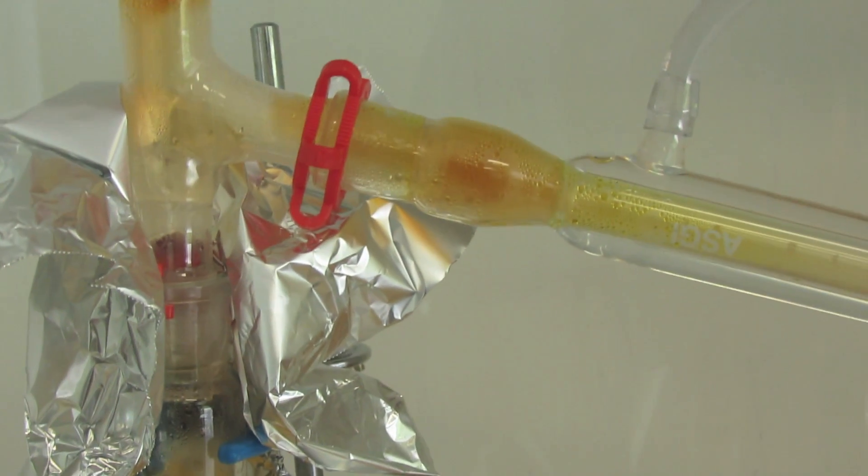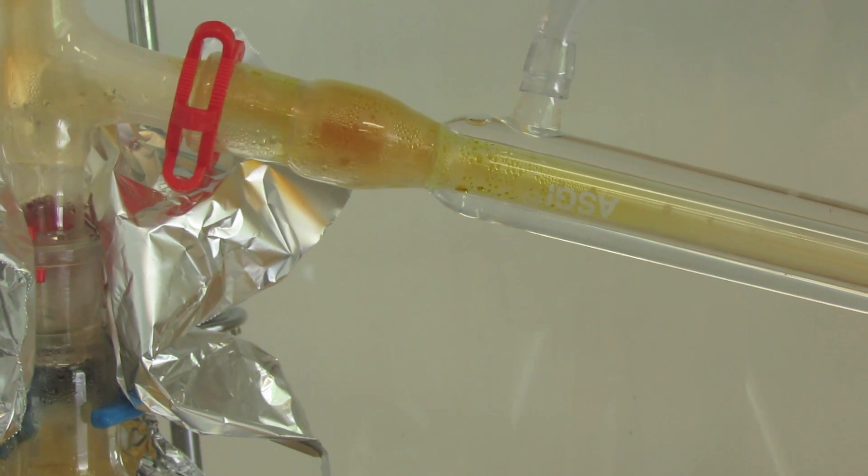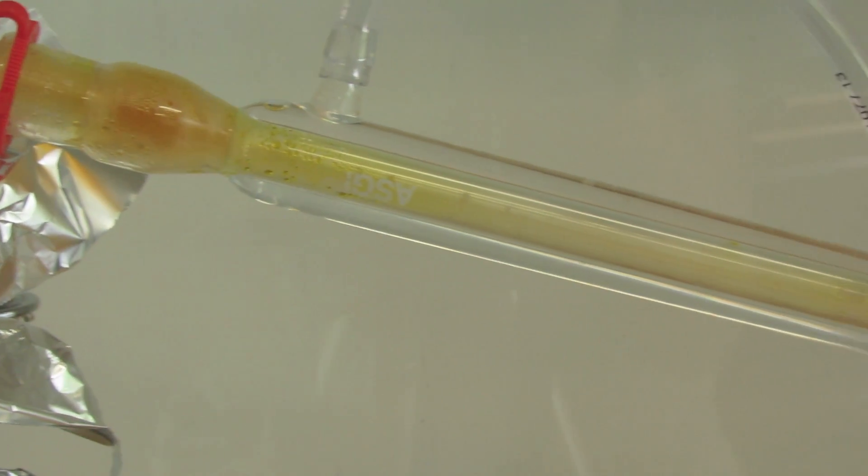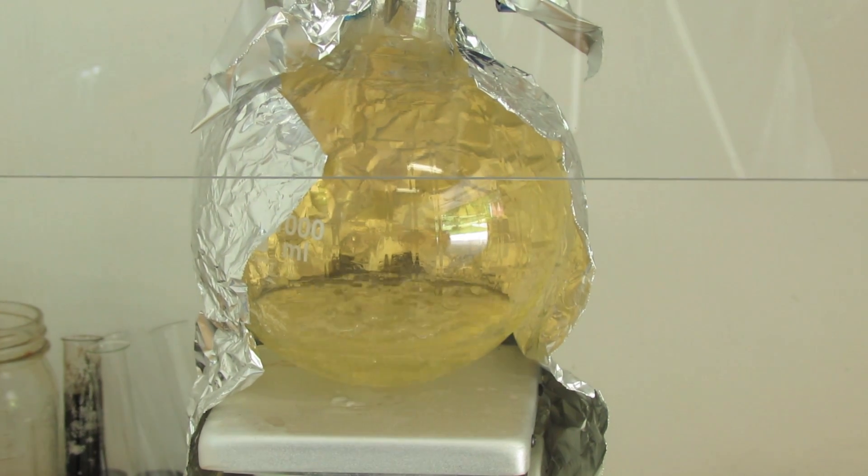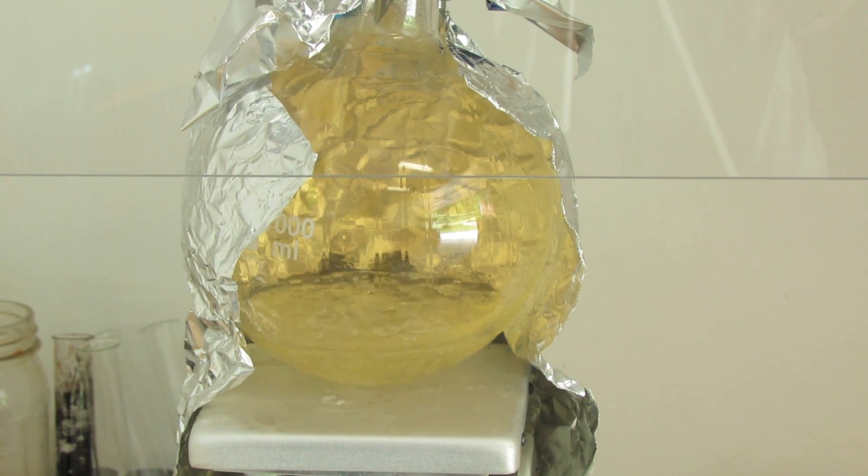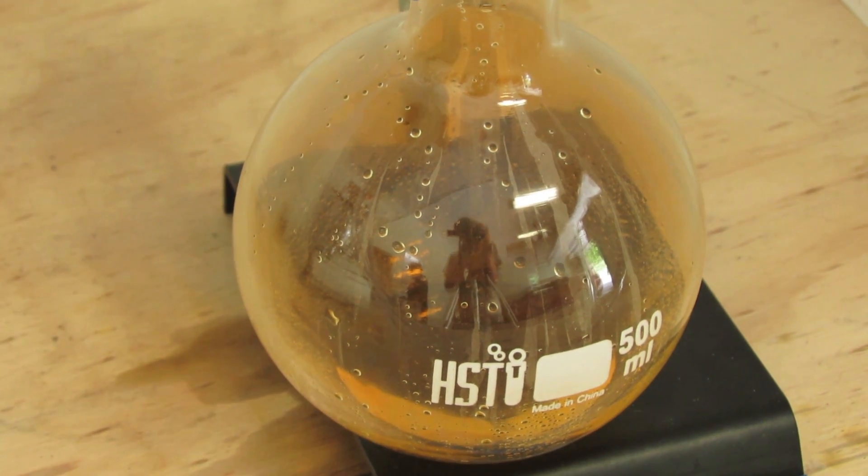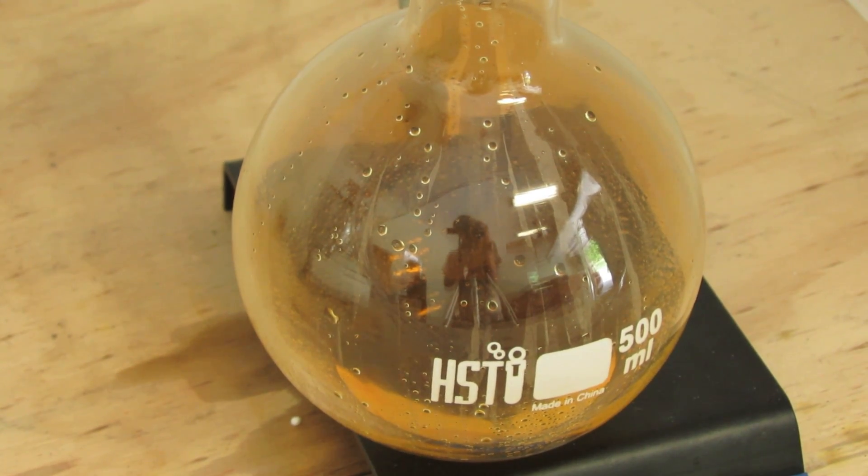Added some aluminum foil around the outside to help keep the heat in. You can see the nitric acid beginning to condense. You can see the reaction mixture boiling vigorously. The receiving flask is beginning to collect quite a bit of nitric acid.